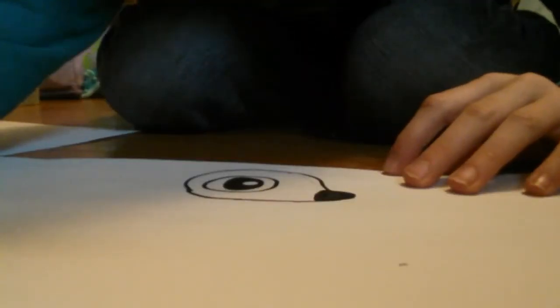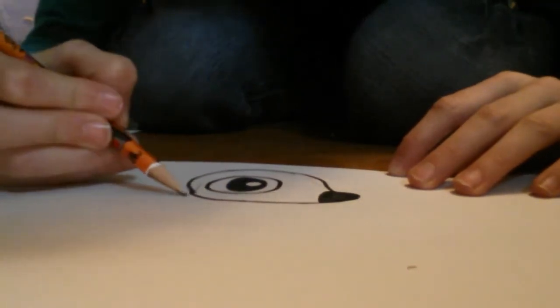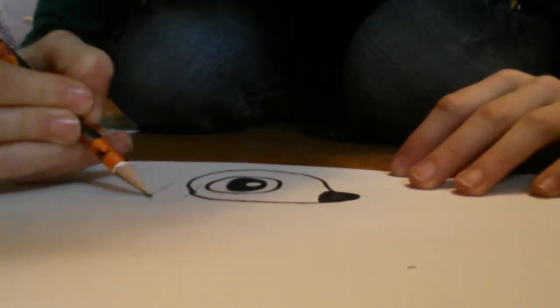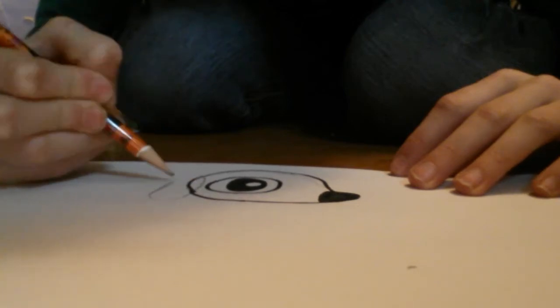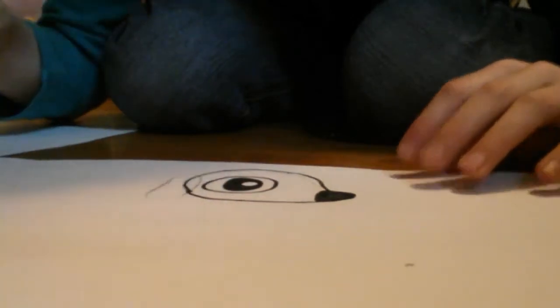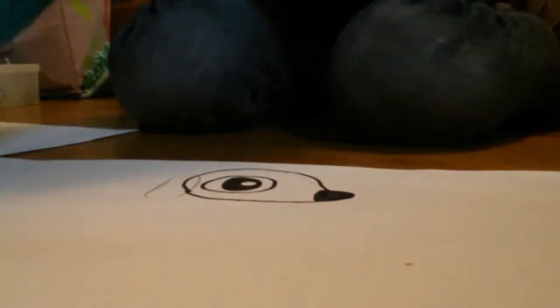Now for the ears. Just draw an oval by the eyes. It should be mostly off the head but a little bit attached. Then of course color it in.